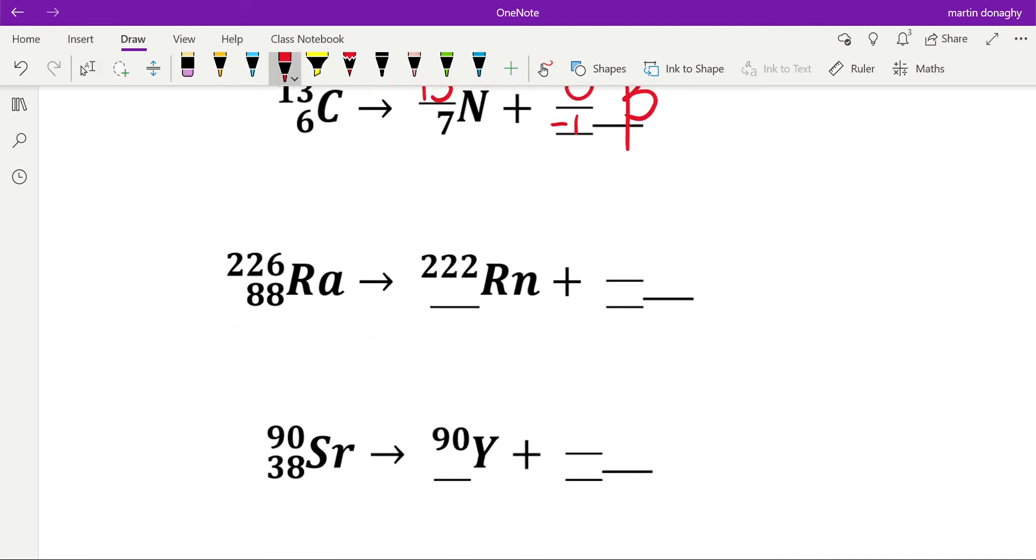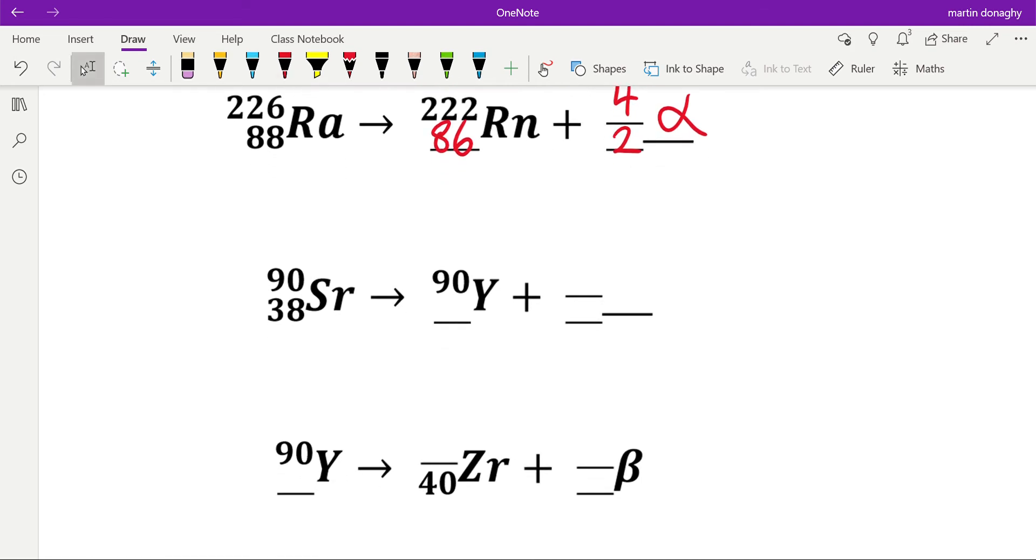Next one, look at the top line. We have 226 changes to 222, which means this is 4. Which means this has to be alpha, which means that's 2, which means this has to be 86. These do get quite easy—it's just addition and subtraction really once you've got a bit of practice.